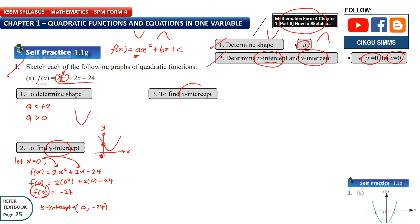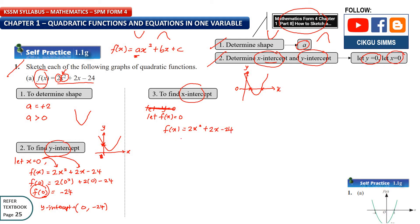The third step is to find the x-intercept. You need to let y equal to zero. The graph touches the x-axis at two points, and at those two points y equals zero. So f(x) = 2x² + 2x - 24, and f(x) is zero. This is now a quadratic equation you need to solve to find the value of x. Normally you will get 2 values of x. So: 2x² + 2x - 24 = 0.